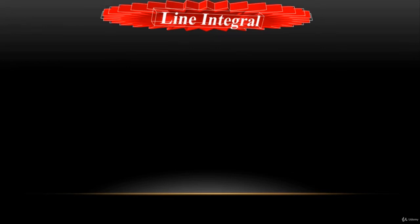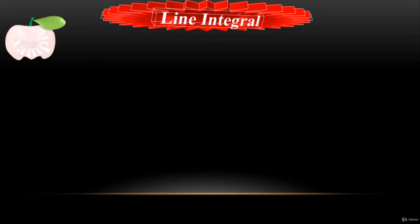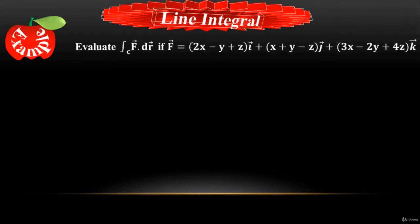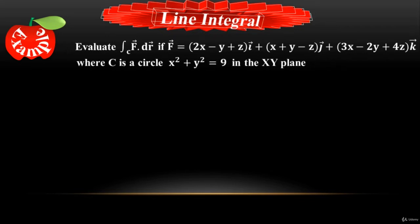Let me do one more tutorial to find the line integral of a circle. Evaluate the line integral where vector F equals (2x − y + z)i + (x + y − z)j + (3x − 2y + 4z)k, where C is a circle x² + y² = 9 in the xy-plane and r = xi + yj + zk. The question says to find the line integral of that circle.